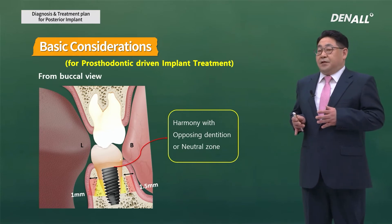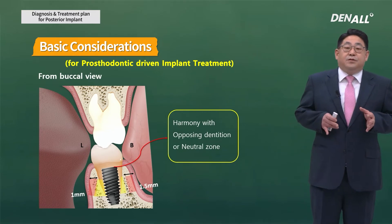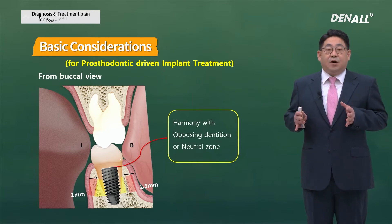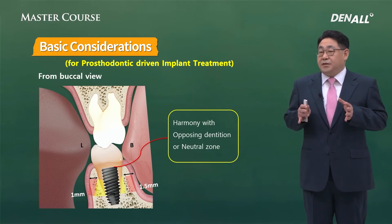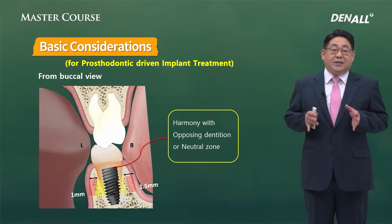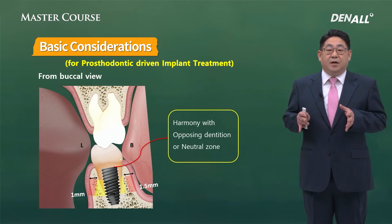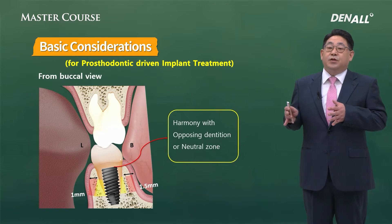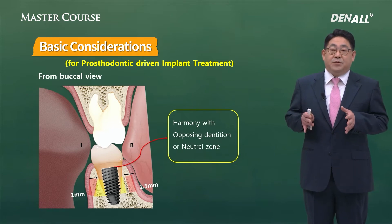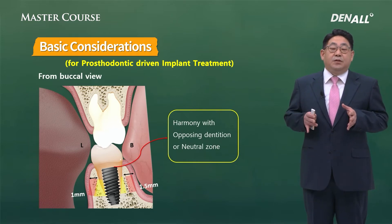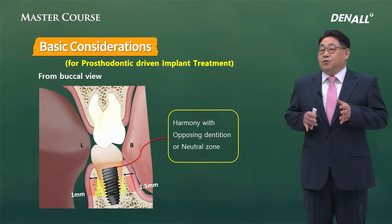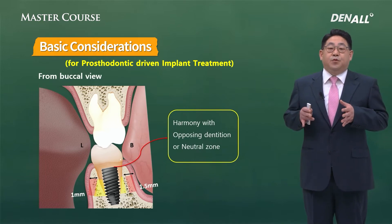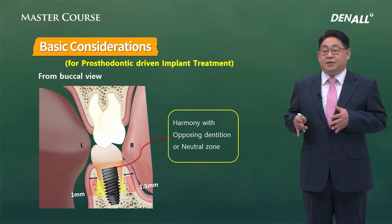From the buccal view, buccal-lingually, the implant-to-crown needs to be in harmony with the antagonist — this is where the implant needs to be placed. If there is no antagonist or if there are positional issues, it needs to be placed in the neutral zone. Now let's look at what kind of problems could occur with posterior prosthesis if the implant is not placed in an ideal position.